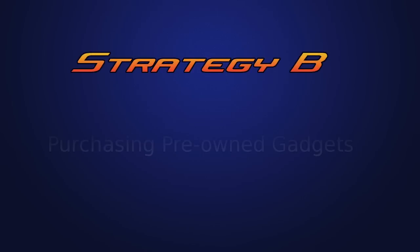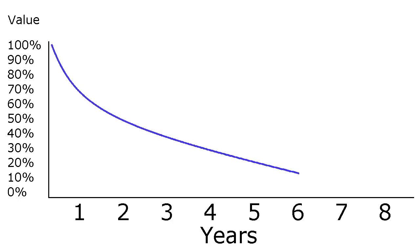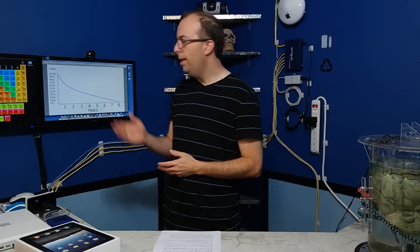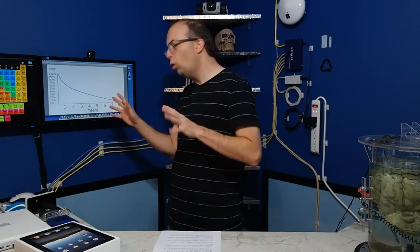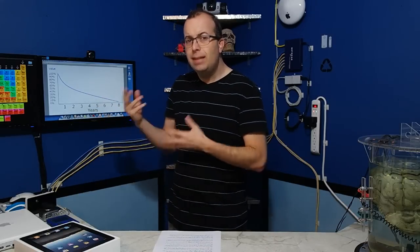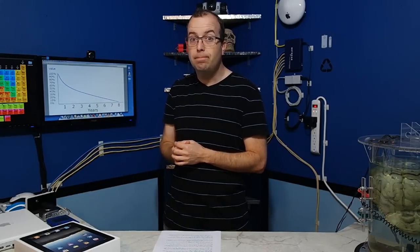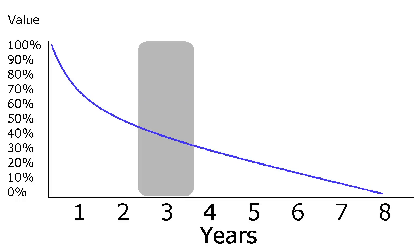Okay, now let's talk about strategy B. Let's see if we can chart out the value of electronic gadgets. Let's say that on the left is the value of the gadget, with 100% being the cost to buy it new at the store. And on the bottom will represent the age of the gadget. So this curve more or less represents the depreciation of that gadget over time. Now, this curve here is going to be different for different gadgets, but it's actually a pretty typical representation. So you can essentially break down the lifespan of the gadget into several different age ranges.